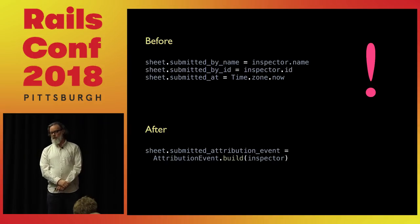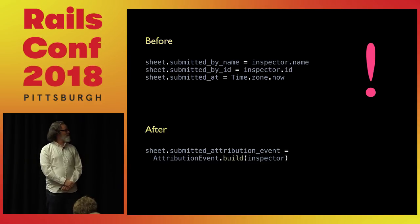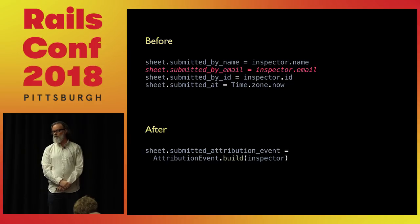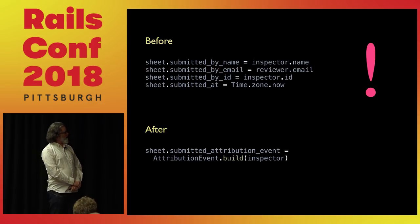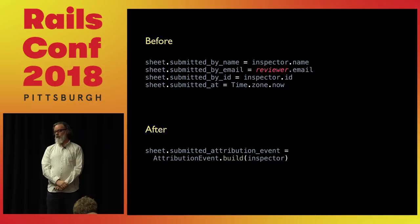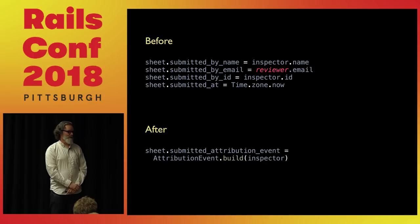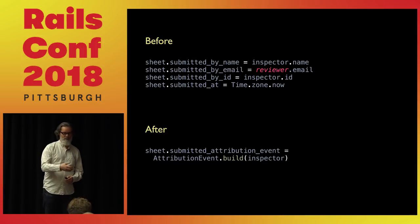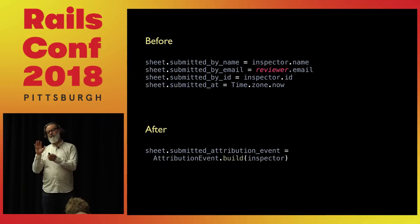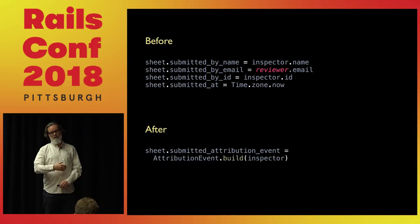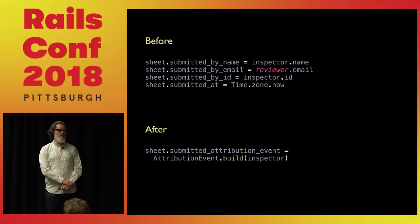There's another important benefit of this design direction: there are actually some errors that were previously possible that are no longer possible. For example, you could simply forget to set the email. With our new design we can't actually make that mistake anymore. Here's another mistake you could have made: putting in a different user's email. These kinds of mistakes could have gotten into the codebase, and now they can't, because we have more abstract code. There are a lot of benefits to noticing duplication, making an abstraction, coming up with a name for it, and then finding you can notice even more duplication or abstraction possibilities.